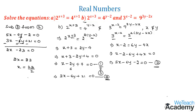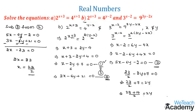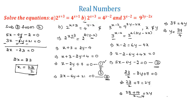Now we substitute x = 23/2 into Equation 1 to find y. We get 23/2 - 2y + 7 = 0, so 23/2 + 7 = 2y. Taking LCM of 2: (23 + 14)/2 = 2y, giving 37/2 = 2y. Cross multiplying gives 37 = 4y, so y = 37/4.